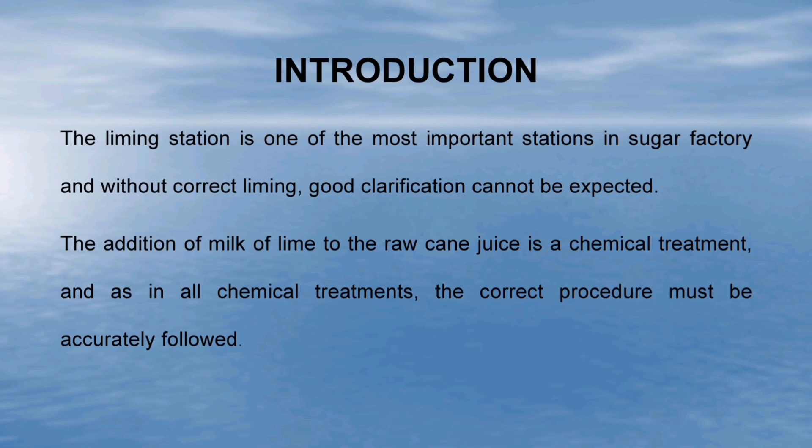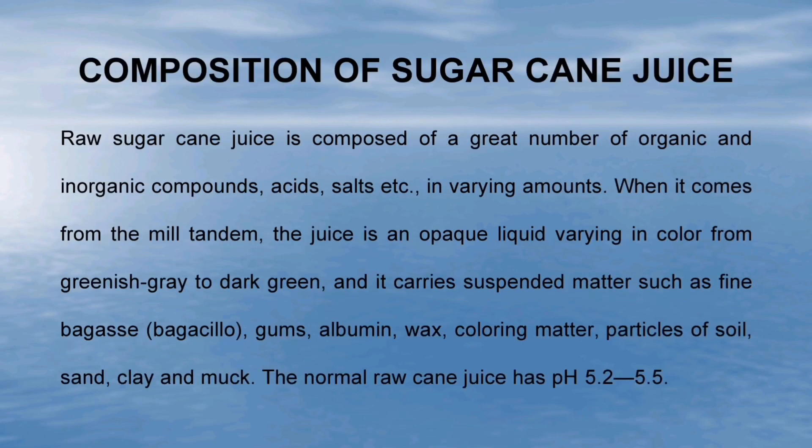First, we know what is the significance of juice clarification in sugar industry. The liming station is one of the most important stations in a sugar factory and without correct liming, good clarification cannot be expected. The addition of milk of lime to the raw cane juice is a chemical treatment, and as in all chemical treatments, the correct procedure must be accurately followed. It should be noted that if the process of juice clarification is good, then overall performance of the production house will be good. Before adding lime to the sugarcane juice, the composition of sugarcane juice should be monitored.